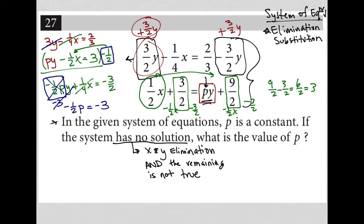Hopefully that makes sense. I need p to be a value that causes negative one half p to equal negative three in order for both X and Y to eliminate. And that is what we'll always see as the case when a system of equations has no solution. So all I really have to do to solve this is to solve this equation here.